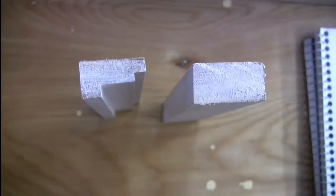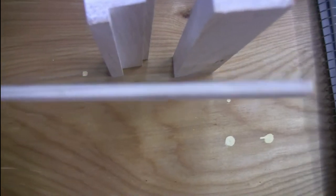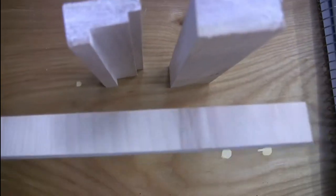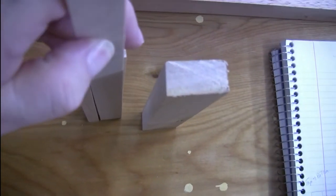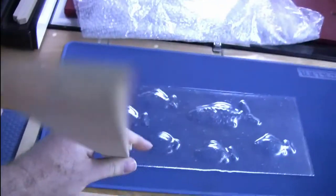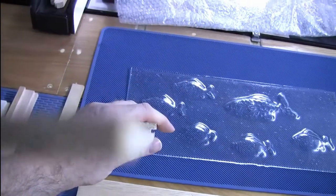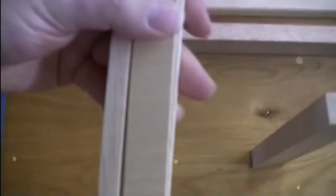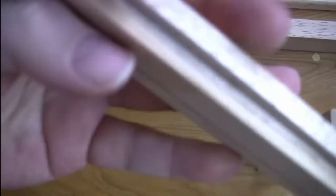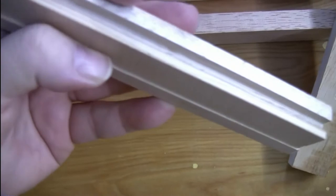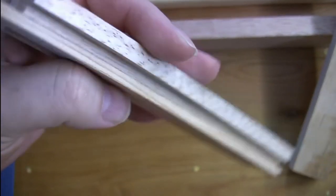So then we cut pieces of thin 3 sixteenths inch plywood that will basically fit in there like that. And then the glass, that will hold in the glass. There'll be a little bit of a lip so it doesn't stick out past.